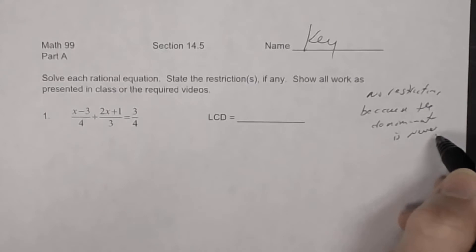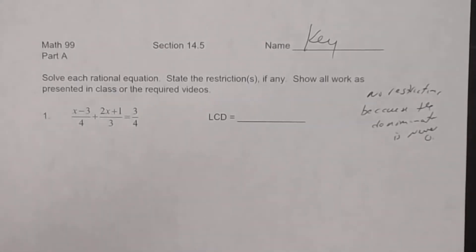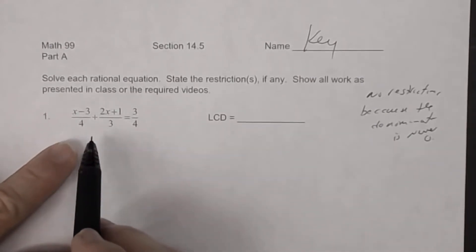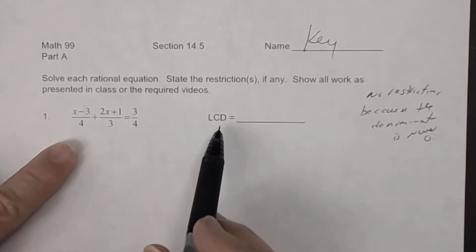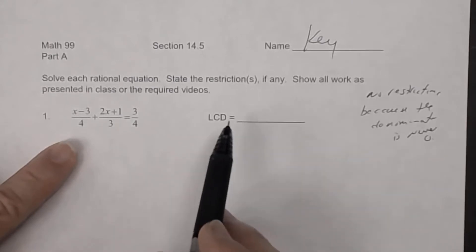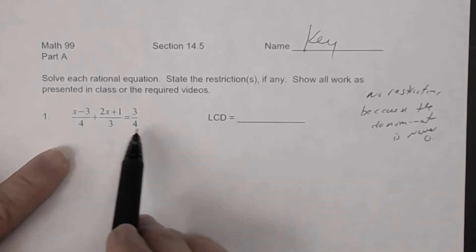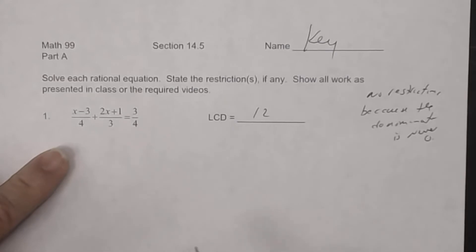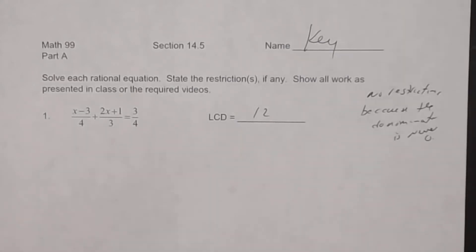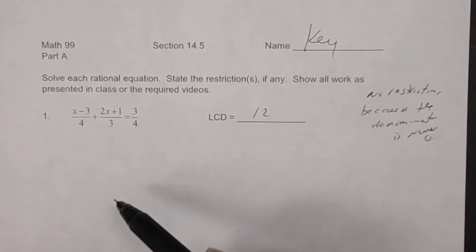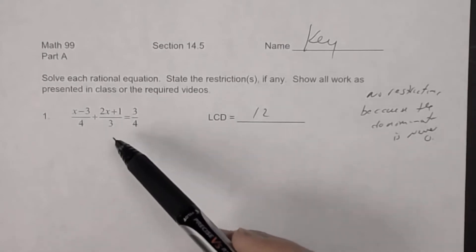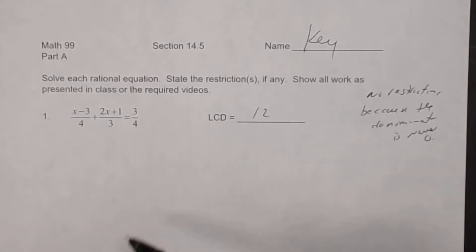When solving a rational equation, the first thing you want to do is find the LCD — the least common denominator. In number one it's pretty easy: the denominators are four, three, and four, so the LCD is twelve. Always use the least common denominator; using 24 instead would make things unnecessarily difficult.